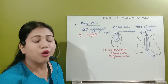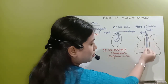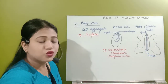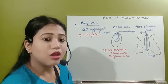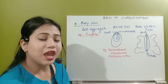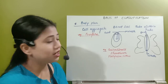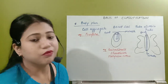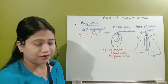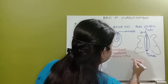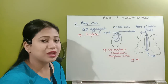That type of body plan where the body itself is a tube and within the tube there is an alimentary canal - there is another tube - is known as tube within tube body plan. Those organisms which have a separate mouth to take food and an anus to remove waste, that type of body plan is known as tube within tube body plan.